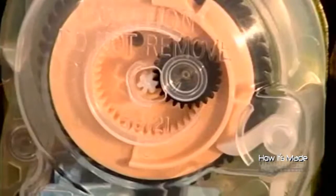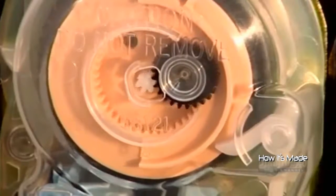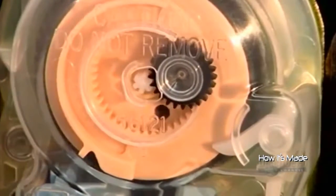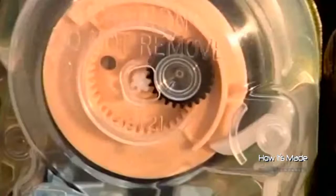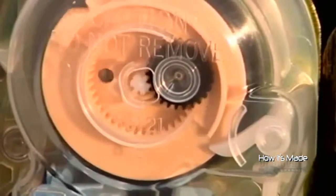At this factory, every single seat belt component has to pass a thorough quality control check. Here a machine checks a key safety feature, a lever and ratchet mechanism that prevents the webbing from extending after you've belted in a child car seat.